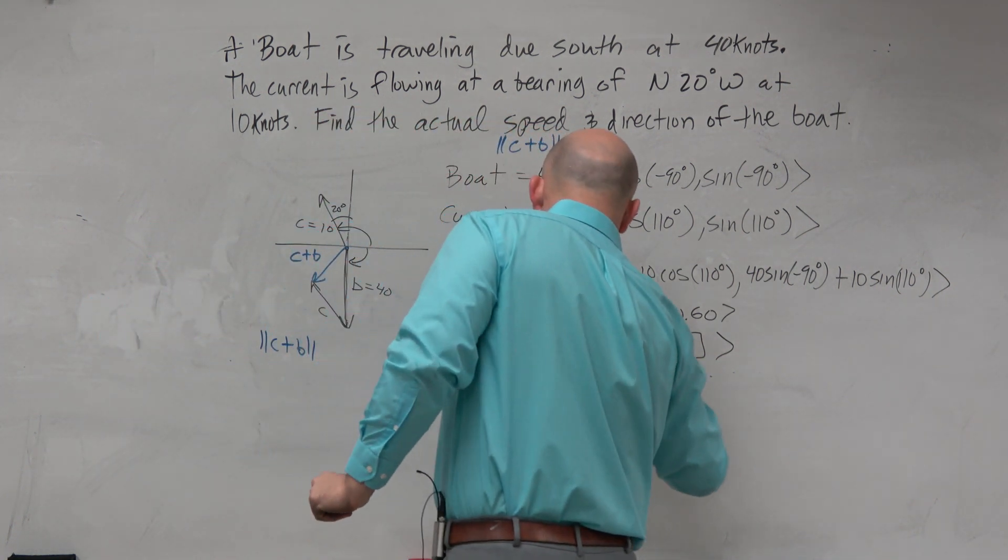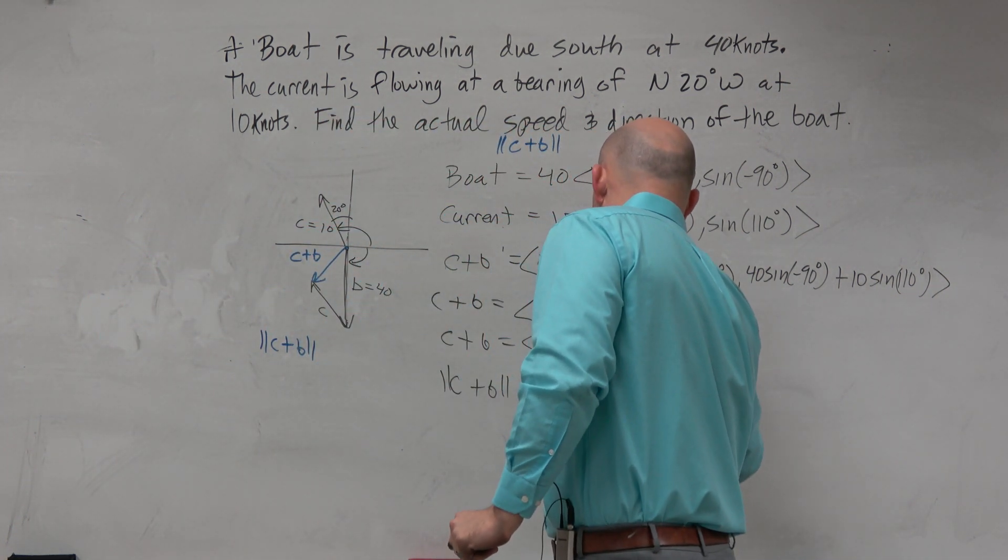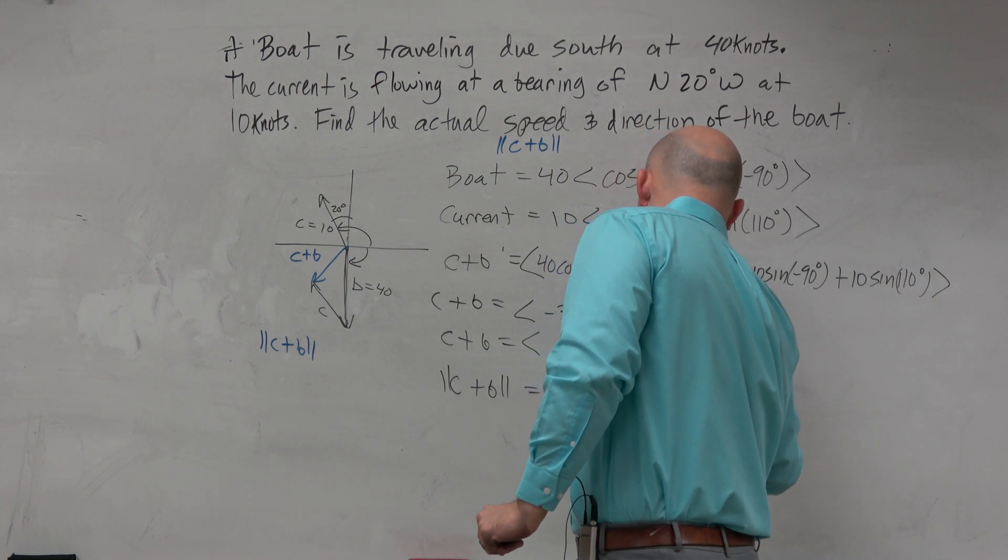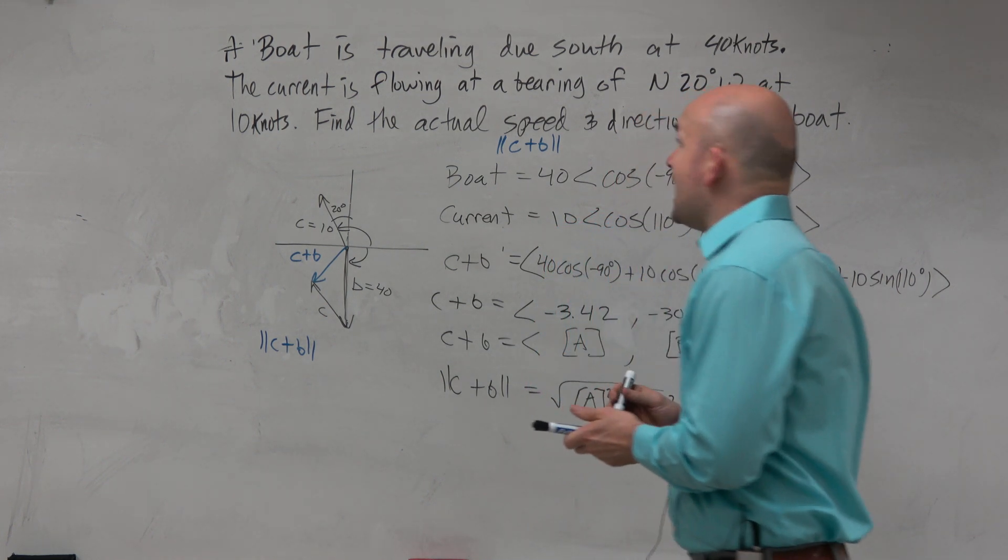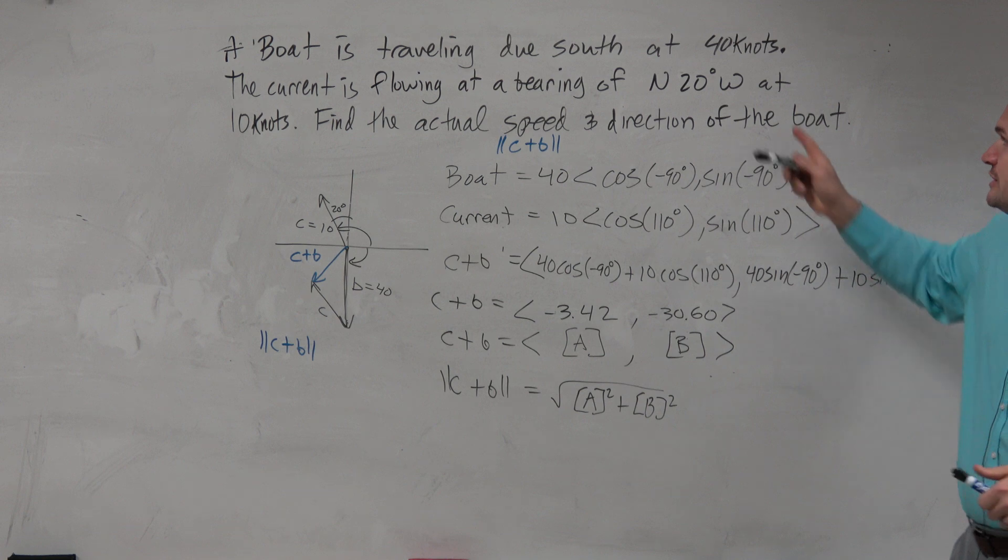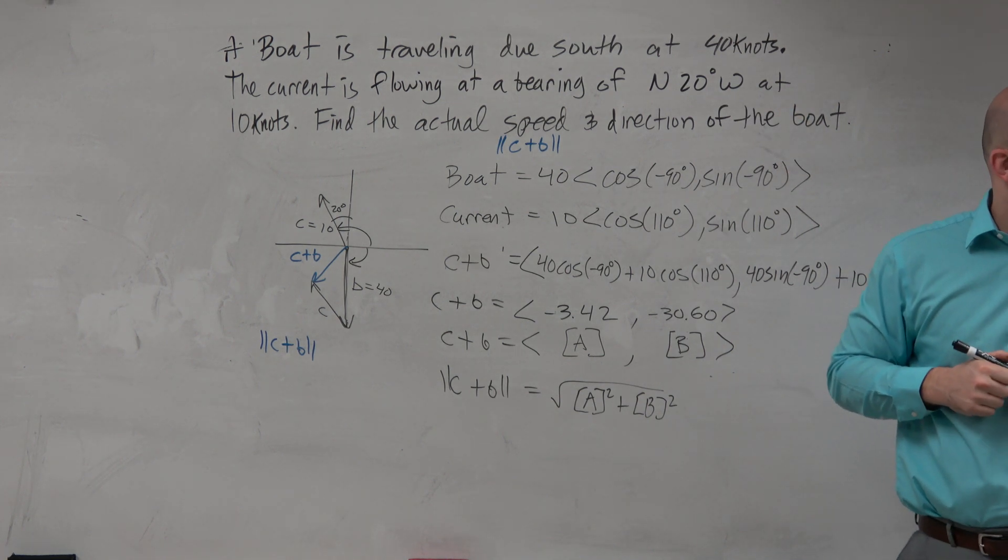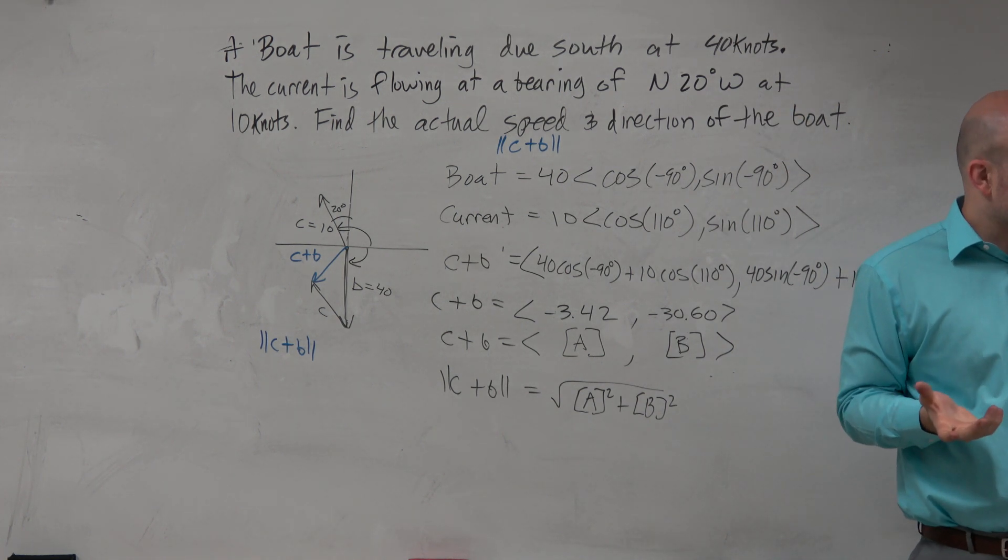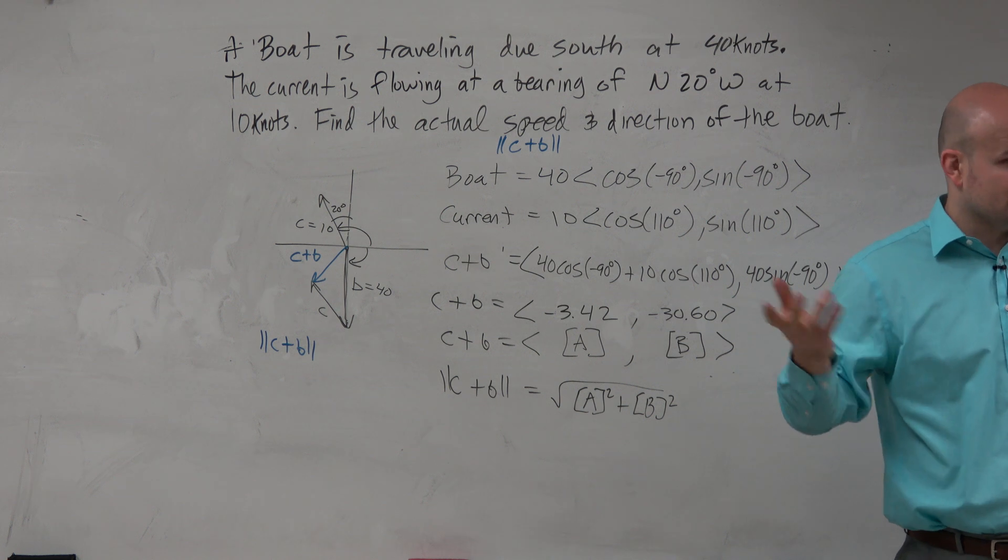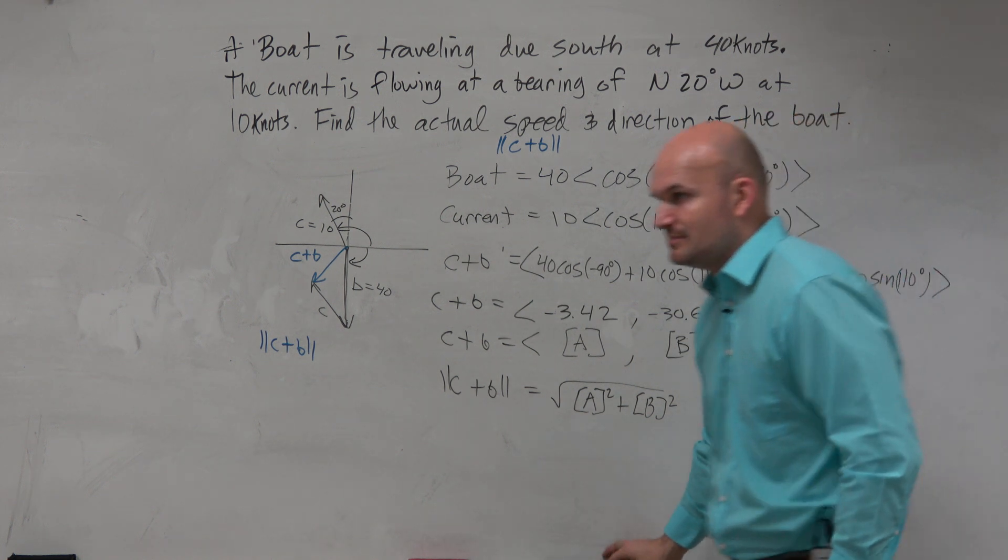Now, can we figure out the magnitude? Yes. All you're going to do is take the square root of A squared plus B squared. Now, before we even calculate that, should that be faster than 40 knots or slower than 40 knots? Should be slower, right? So if we get something faster or something crazy, we obviously know we did something wrong.